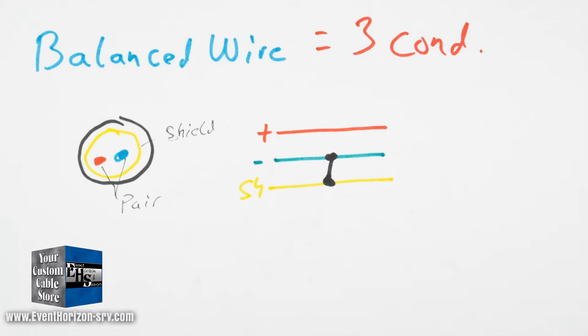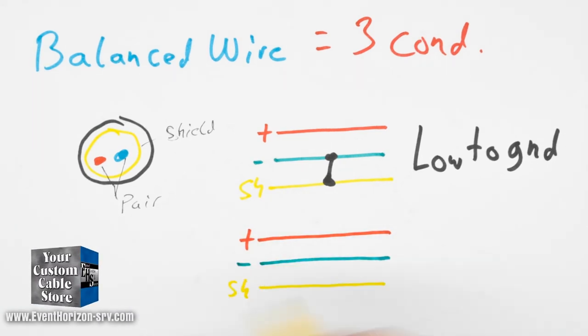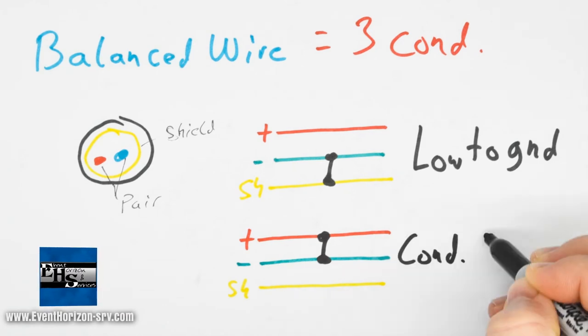This will be referred to as low to ground wiring. The other way it can be wired is to tie and use it like one larger conductor shown here. We will refer to this as conductor tied wiring.